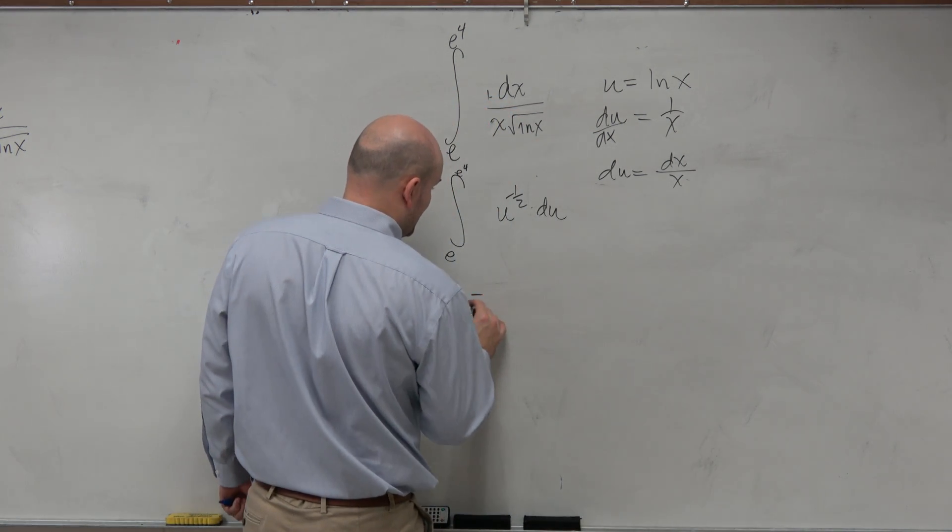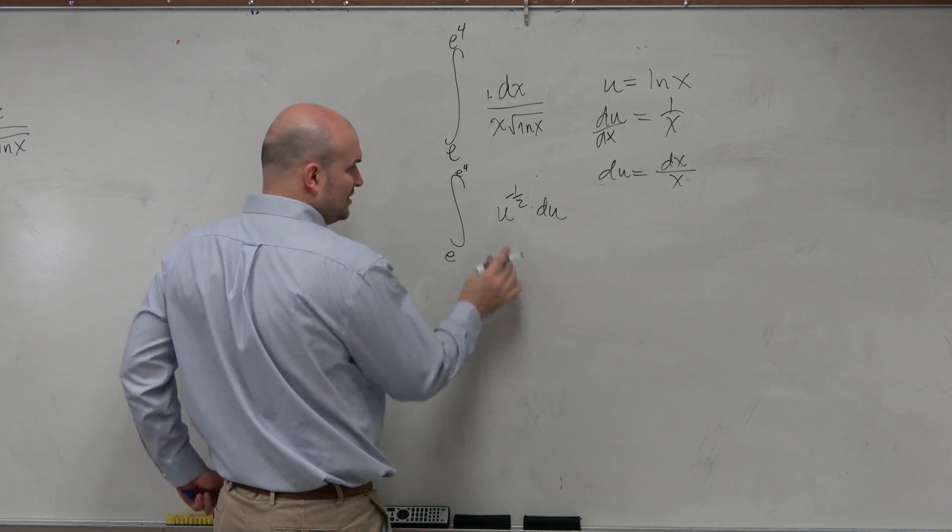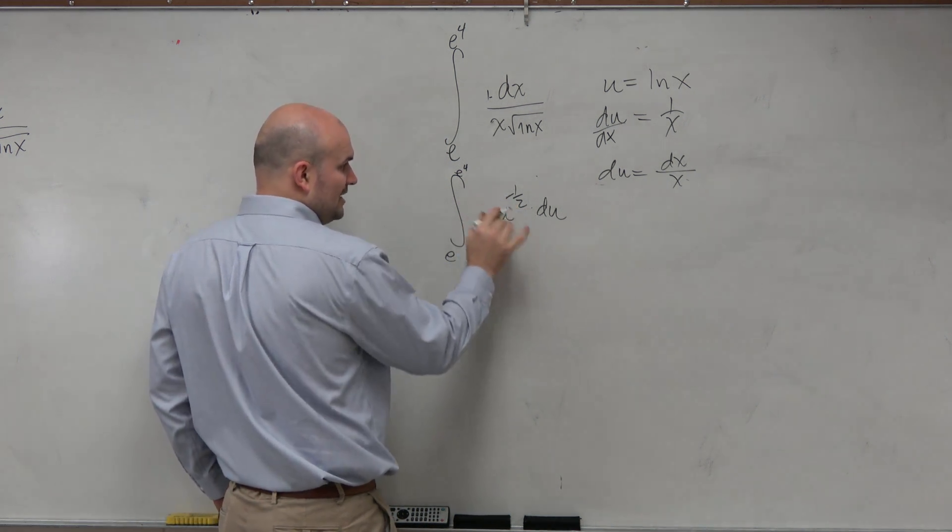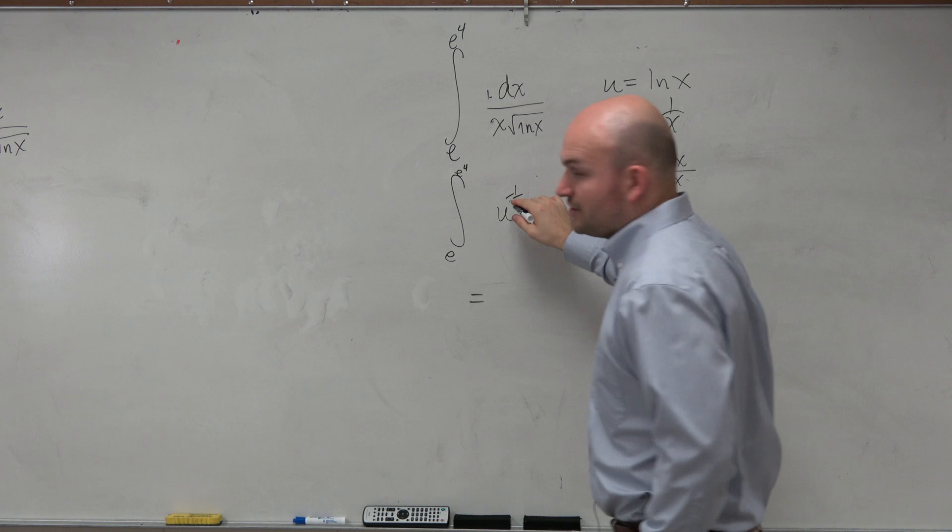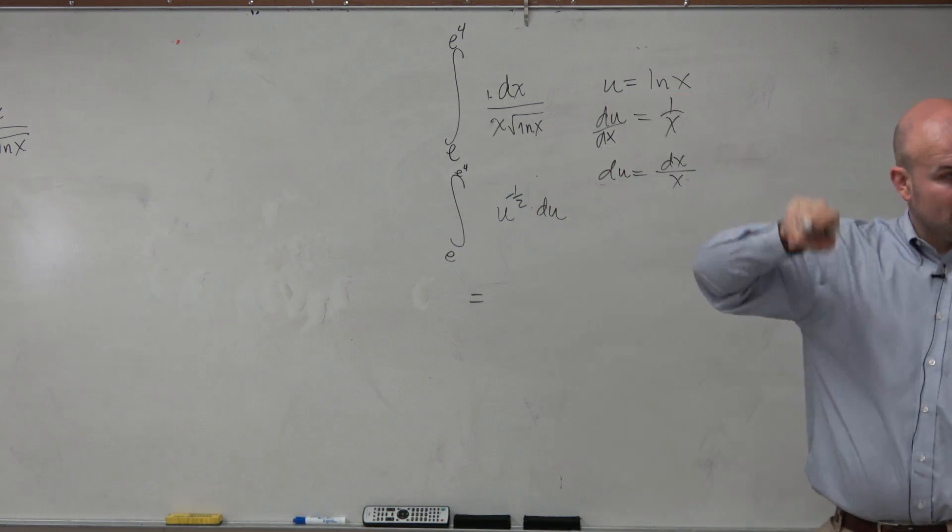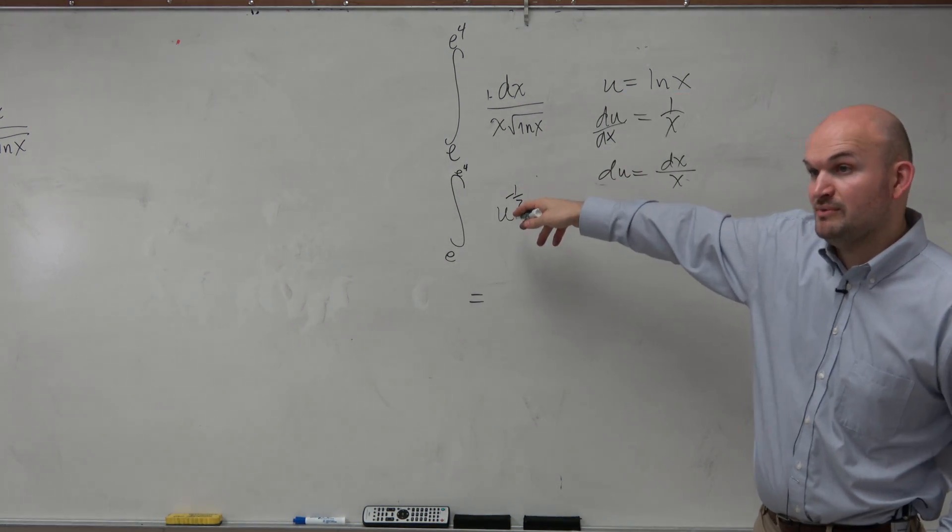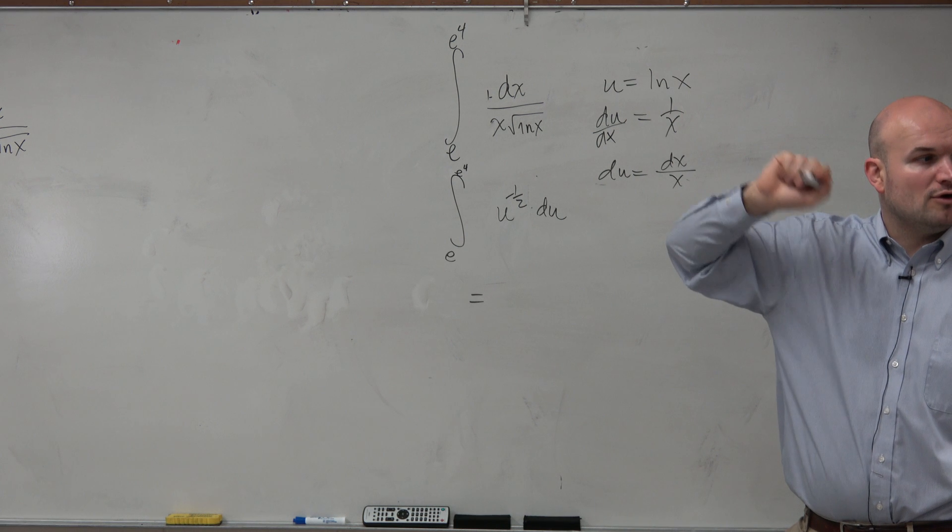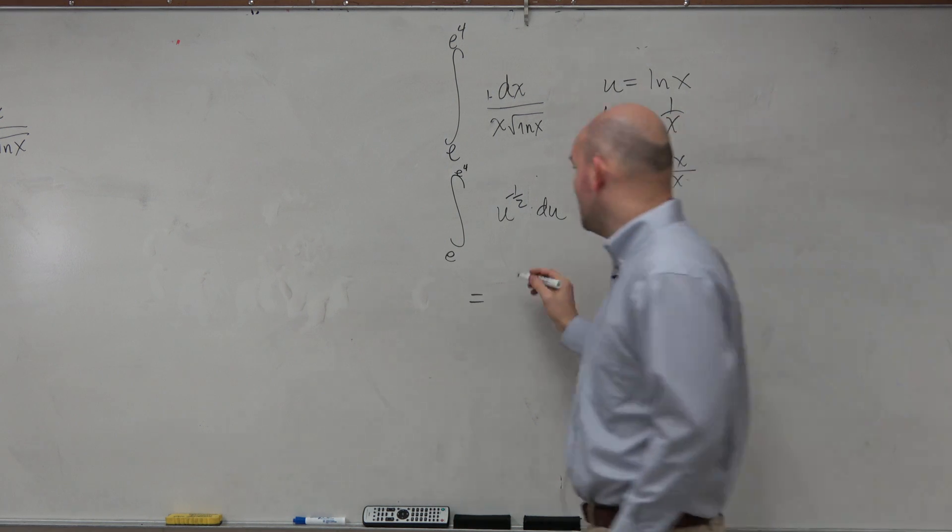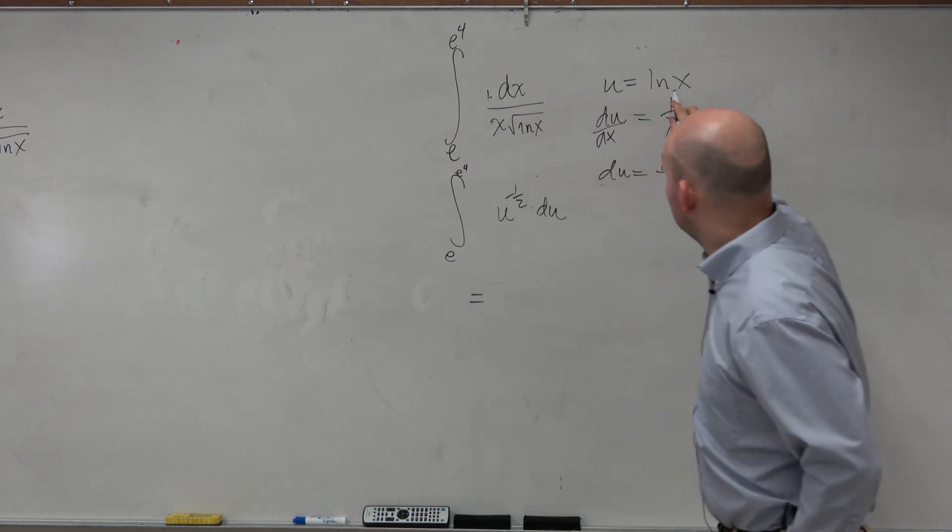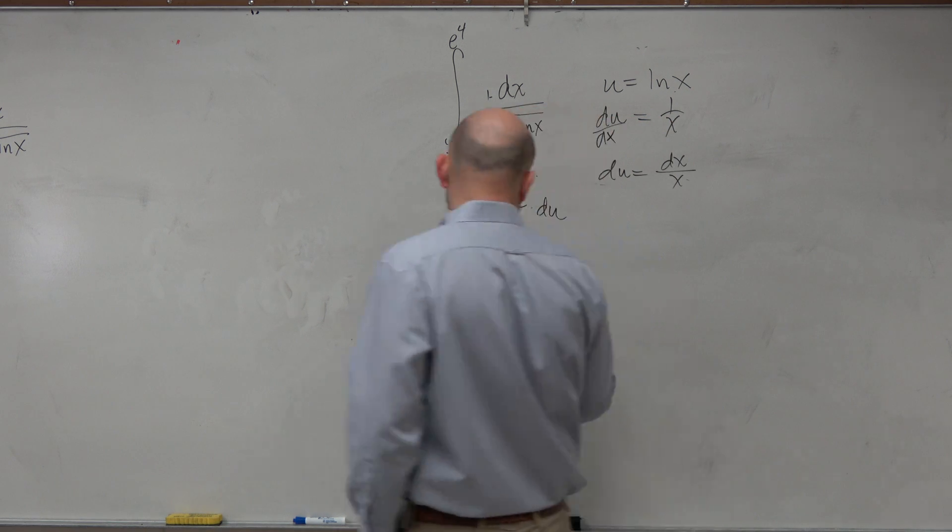And therefore, when I go ahead and integrate this, I'm basically going to have this integration. This is going to be plus 1 half, and then it's 1 over, so I'm sorry, it's plus 1, which would give me 1 half, then divided by 1 over 1 half, which would be multiplied by 2.